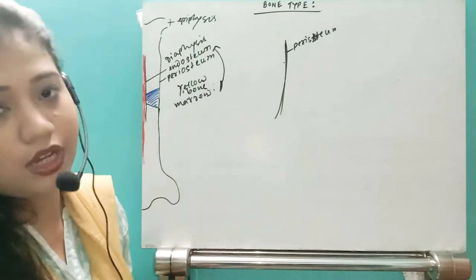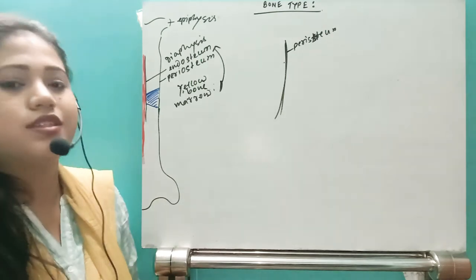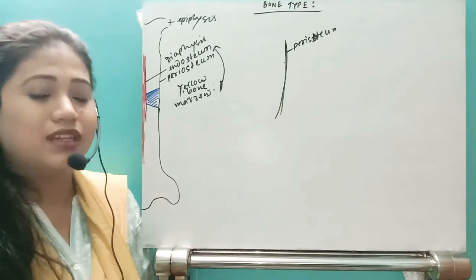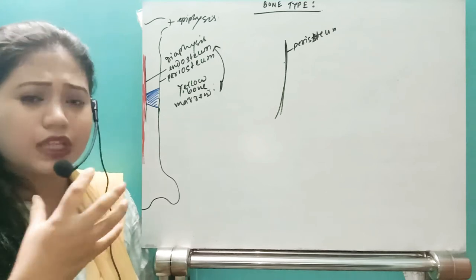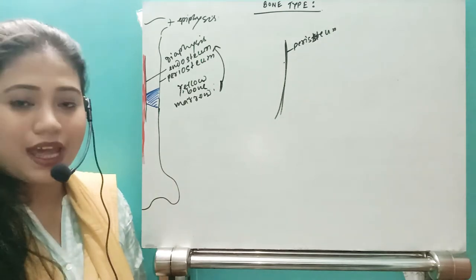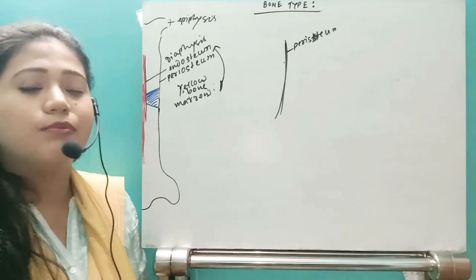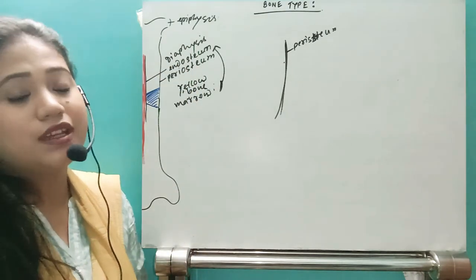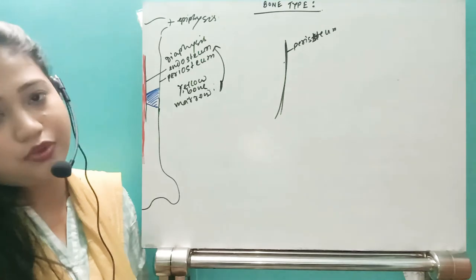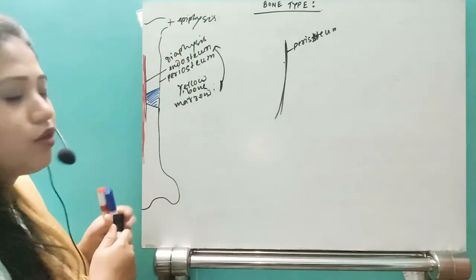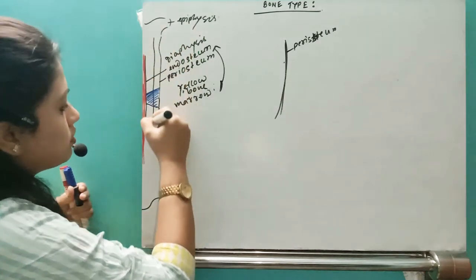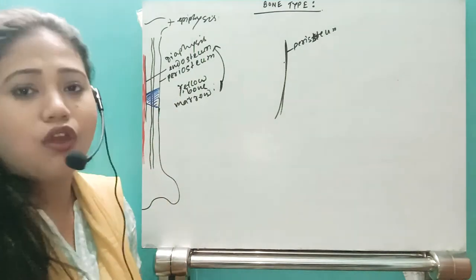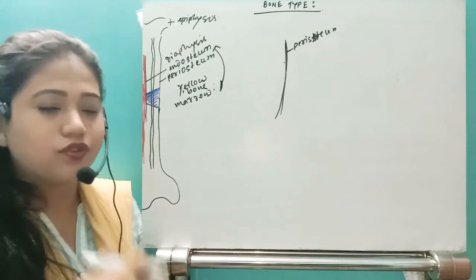First of all, the bone is a very hard structure which does not allow blood, lymph, or nerves to enter freely. In this very hard region, the blood vessel cannot simply penetrate. That is why, for blood vessels to penetrate inside the bone, there are specific tunnel-like structures present. Throughout the entire length of the bone, we have some longitudinal tunnels through which blood vessels run through the diaphysis or shaft of the bone.